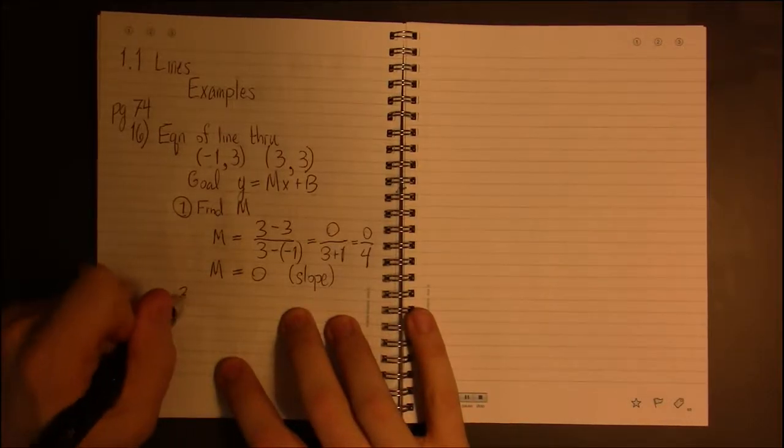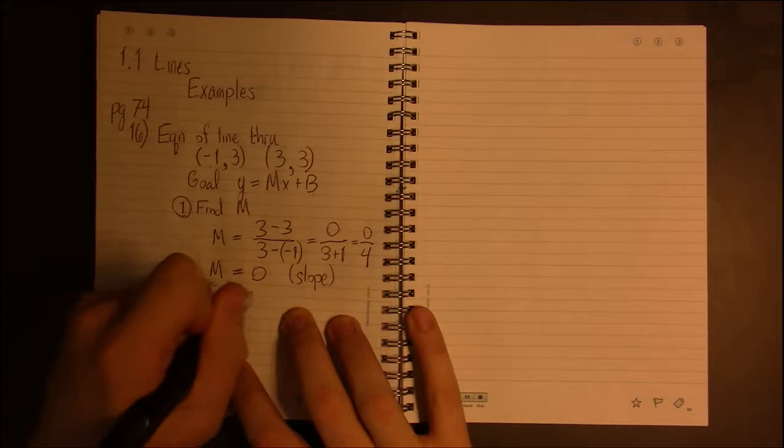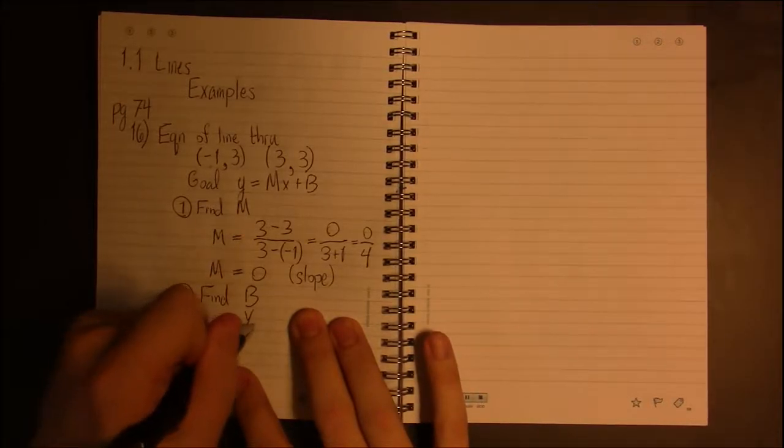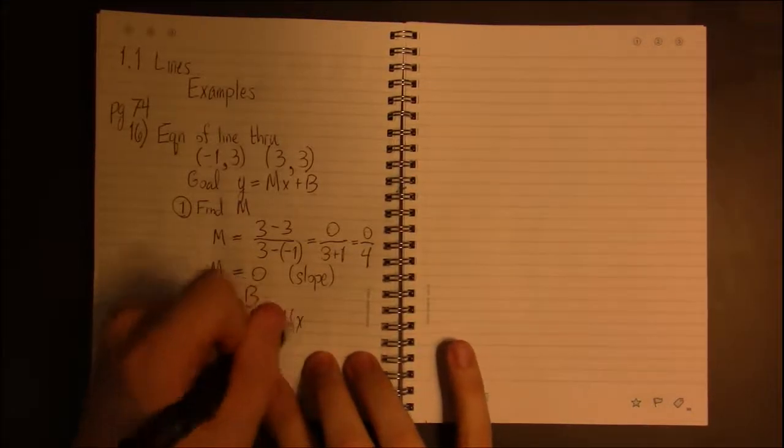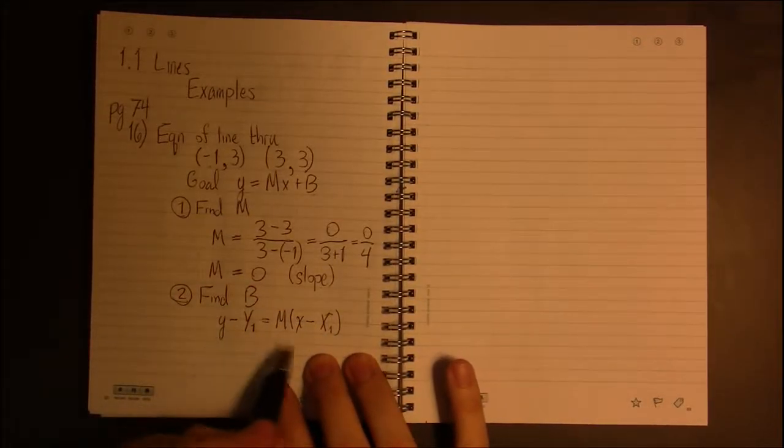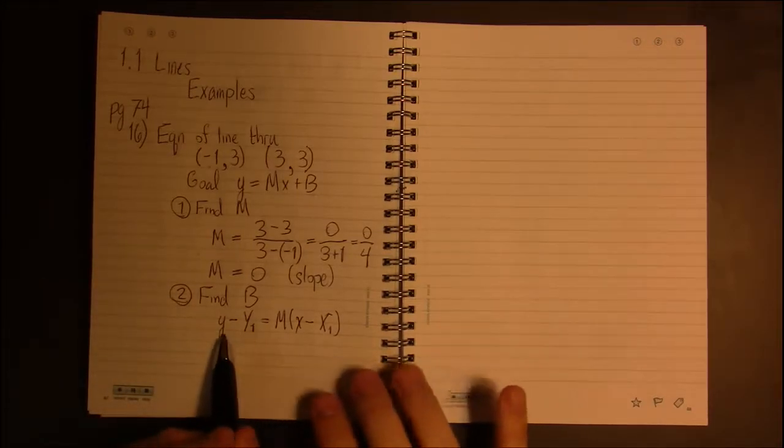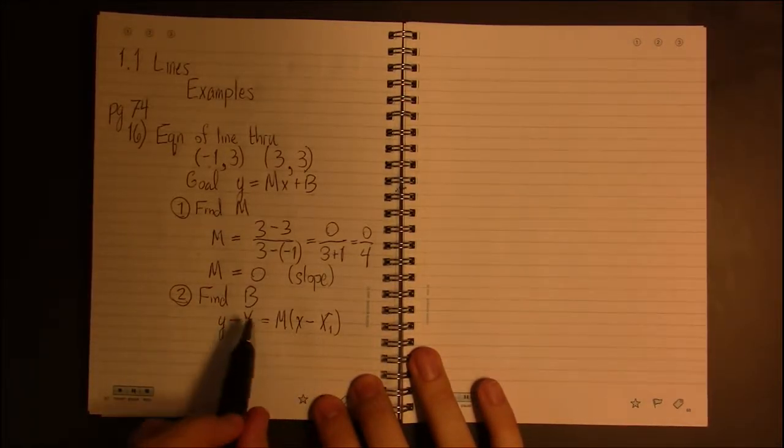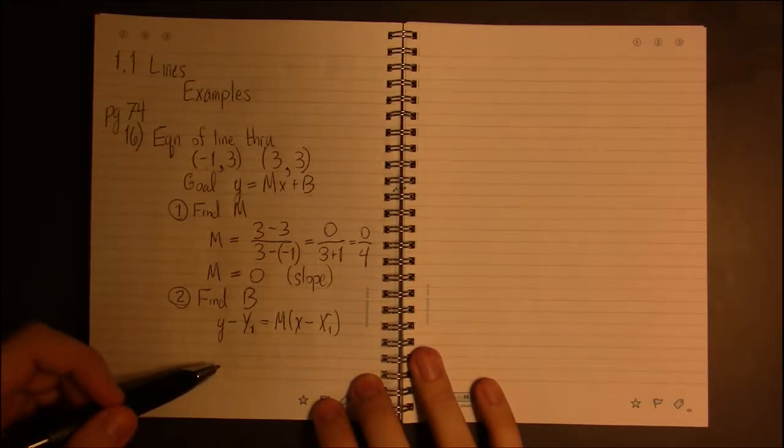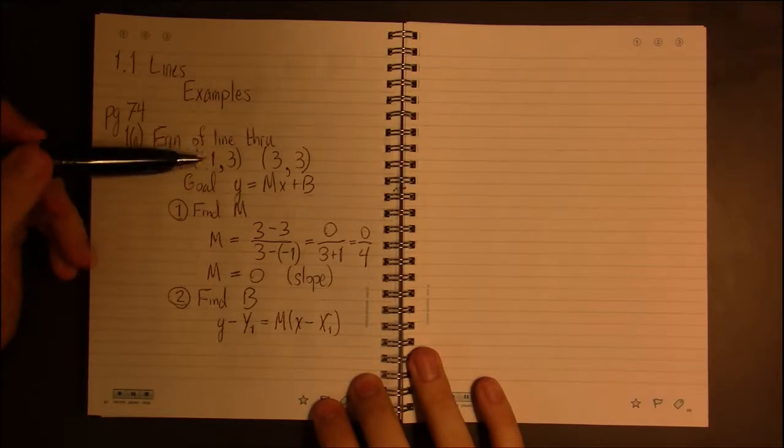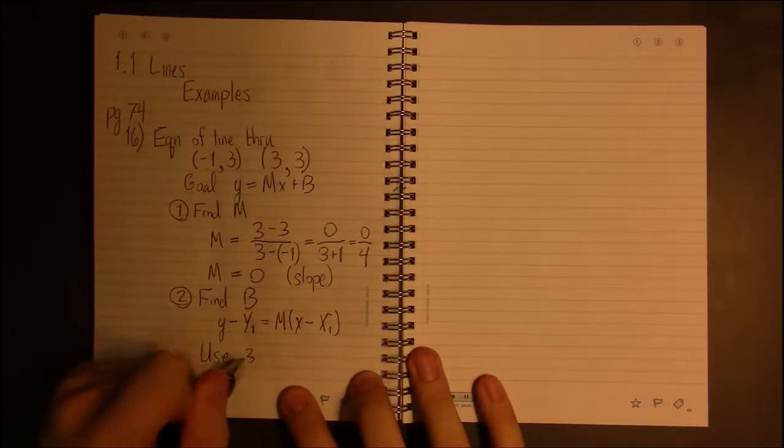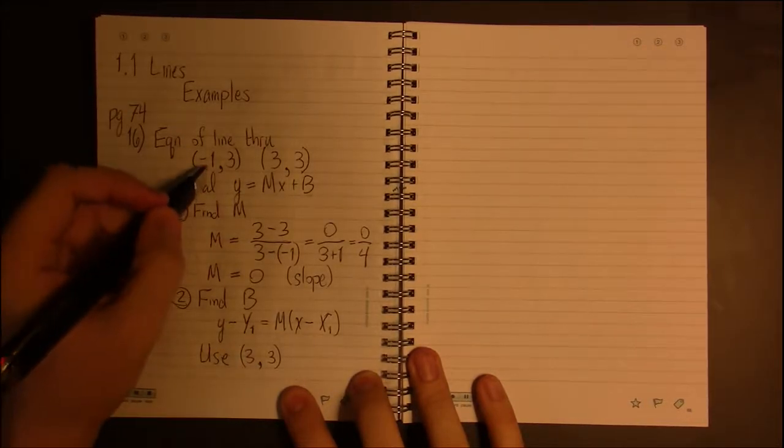And 0 over any nonzero number is just zero. So we have our slope, now we need to get the y-intercept which is the value of B. Now we can either use point slope form or we can plug in a point into this formula and solve for B, which is what we're going to do. But if you prefer point slope, plugging in a point and the slope and then solving for Y, go for it. There's nothing wrong with that method. I just find that most students seem to prefer the method where we